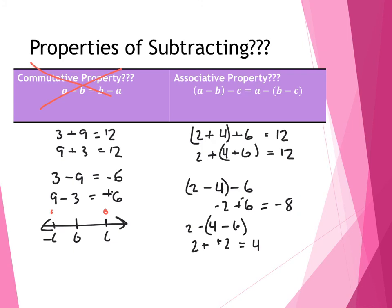So what we find out is that both the commutative property and the associative property — what we talked about is that order doesn't matter with addition. But the key thing with subtraction: the order in which you subtract things does make a difference. So this is something you have to keep in mind — the way you subtract things does make a difference.